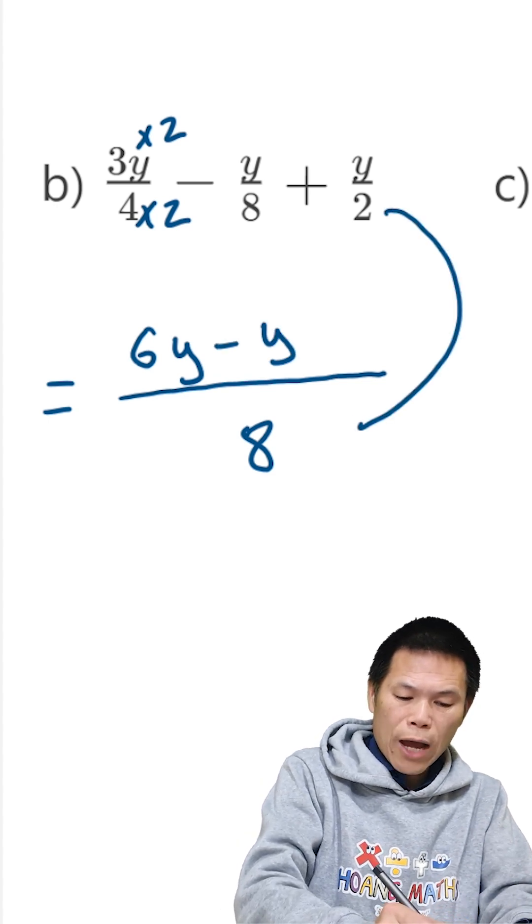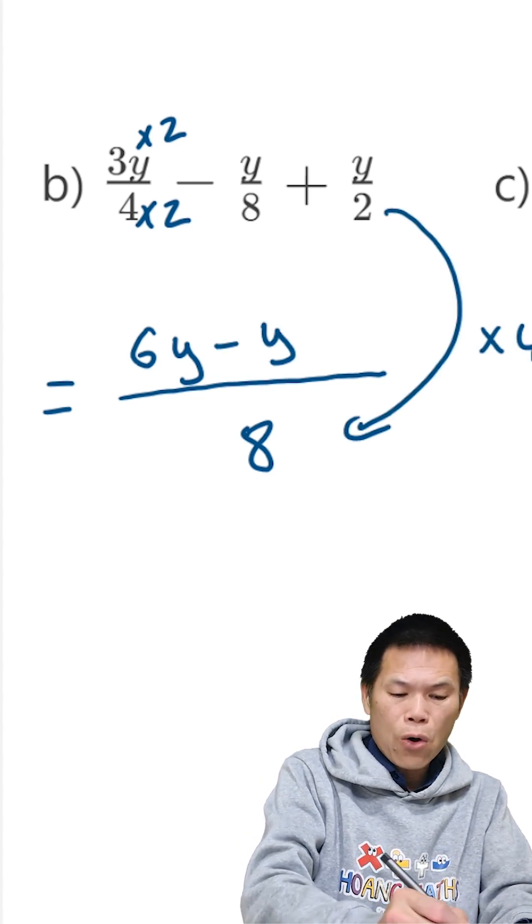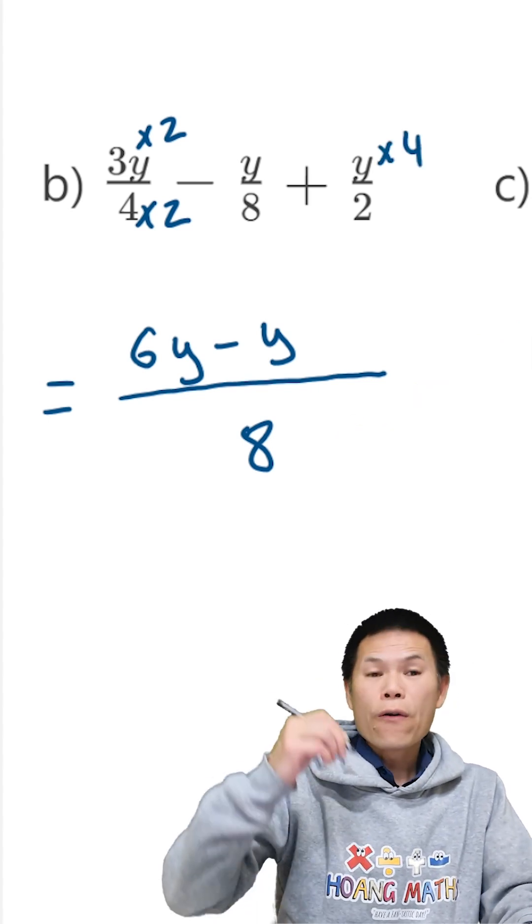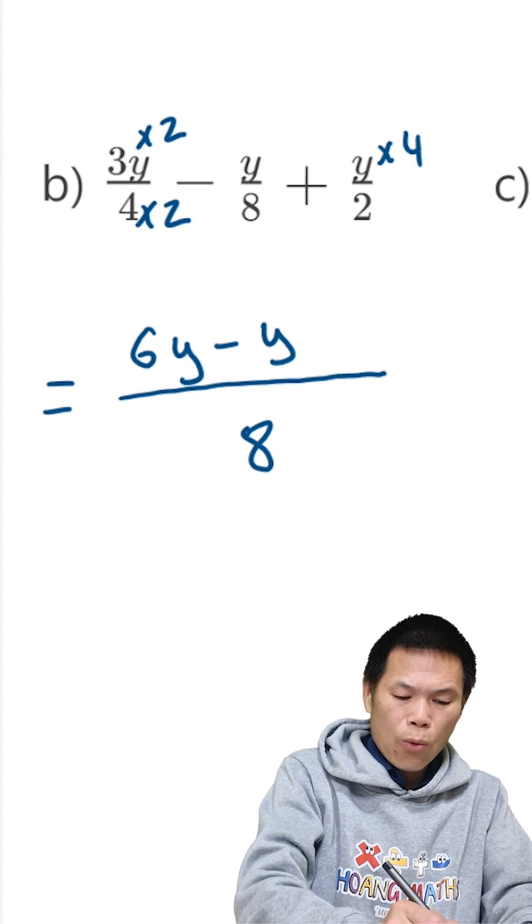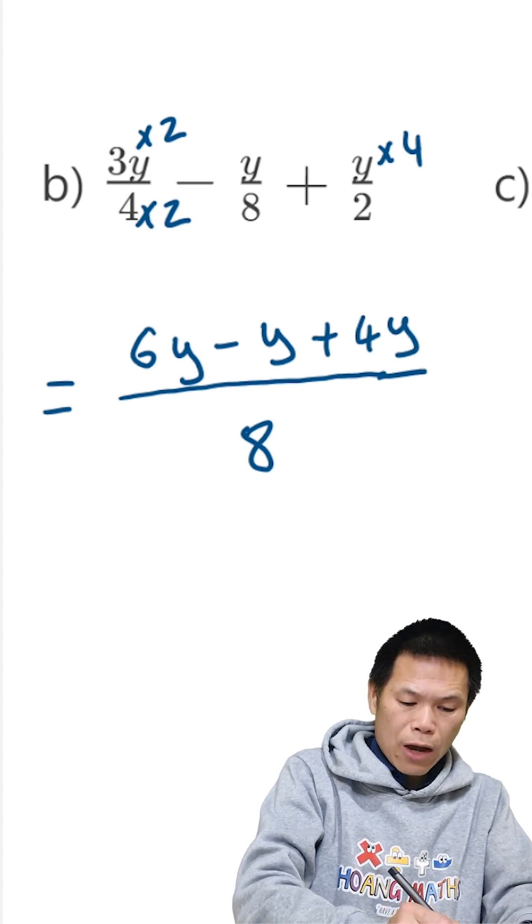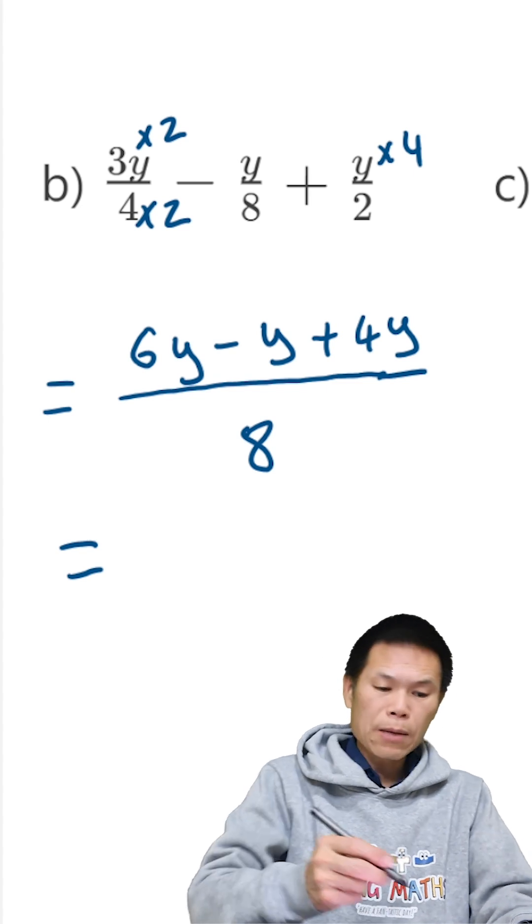And 2 to 8 we times this by 4, so this needs to times by 4. Don't forget, okay? So therefore 4 times y is 4y, we add 4y. So now we just collect the like terms.